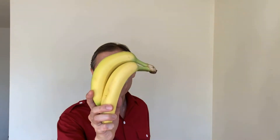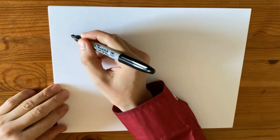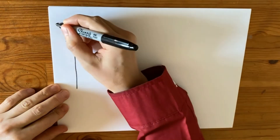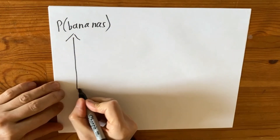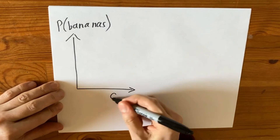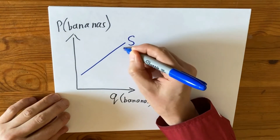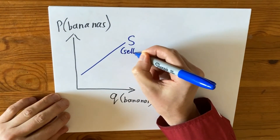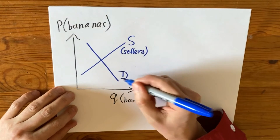Supply and demand of a single product — for example, supply and demand for bananas. On the vertical axis we put price, the price of bananas, and on the horizontal axis we put quantity, the quantity of bananas.